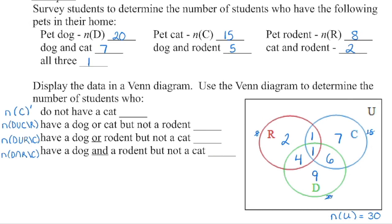Now we can answer questions using the diagram. We're looking for the number of students who do not have a cat. This is the cat circle — we add up everything outside of it: 9 plus 4 is 13, 14, 15, plus 0. Don't forget the 0. We're going to have 15 students who do not have a cat.